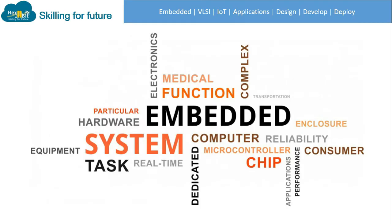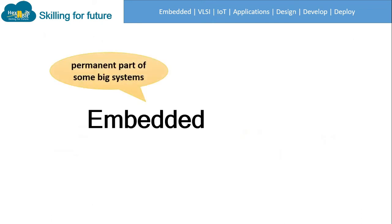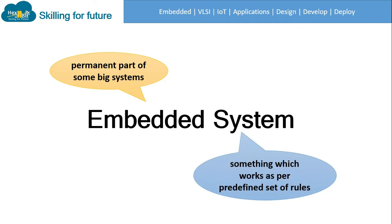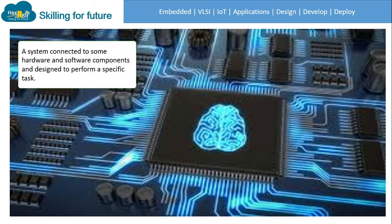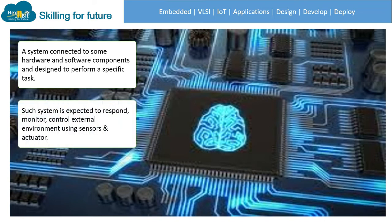Welcome to the very first lecture of this course. In this session we will see the introduction to embedded systems. Embedded means a permanent part of some big system, and a system is something which works as per a predefined set of rules. The overall definition of an embedded system: it is connected with hardware and software components and designed to perform a specific task.